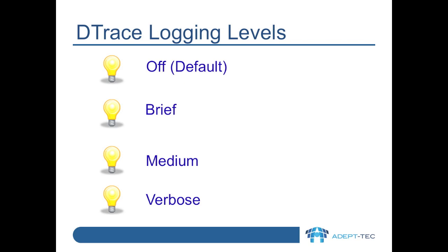Brief logging is just that — it is intended to give an overview of what is happening. Verbose is intended to be very detailed, but definitely watch out for errors that are normal. Medium is the middle ground and can be quite helpful if the issue being investigated is part way through a long running process or task.